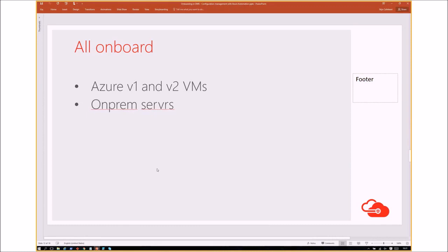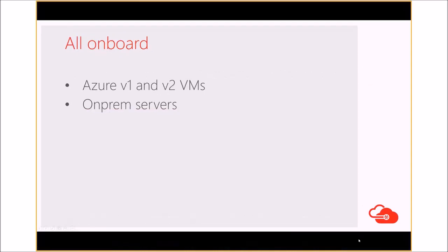Now let's look at onboarding resources. You can onboard both Azure V1 and V2 VMs. Azure V2 VMs can be onboarded using the Azure Automation configuration click-through in the portal. For Azure V1 classic VMs, you need to browse to the VM and use the Desired State Configuration extension. We also have the option to onboard on-premises servers — located within your own data center or within any other cloud, such as AWS or OpenStack.